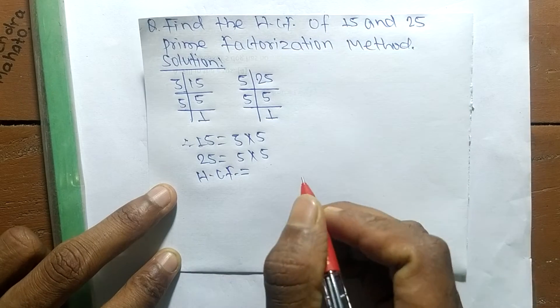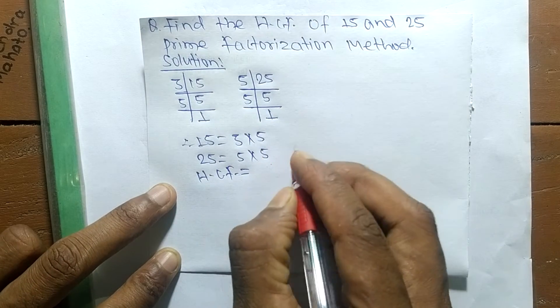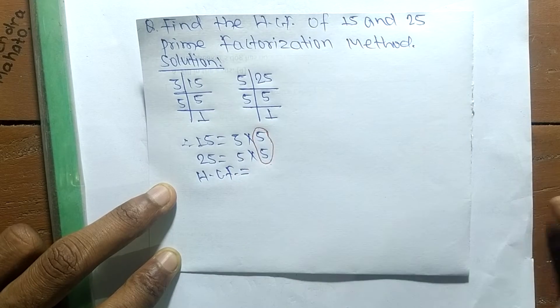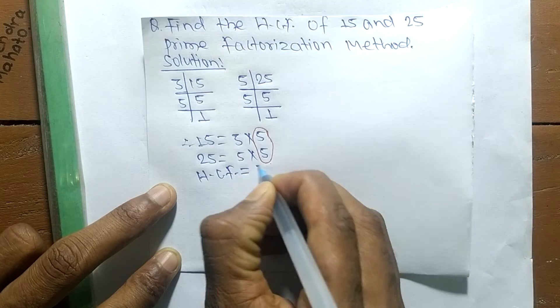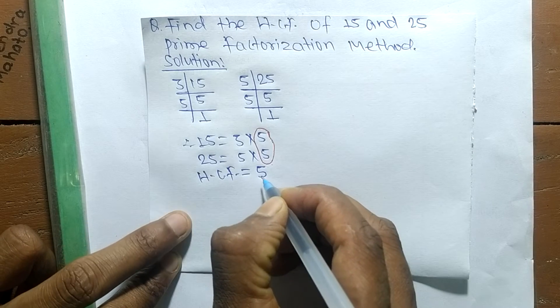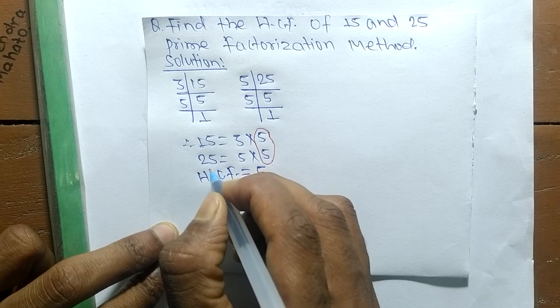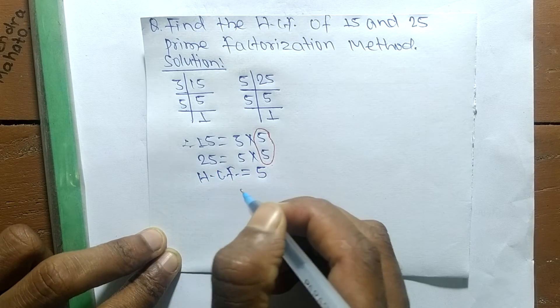So the HCF is equal to... now we have to find out the common elements in these prime factors. So the first common element here is 5. So HCF is equal to 5. So 5 is the highest common factor of 15 and 25.